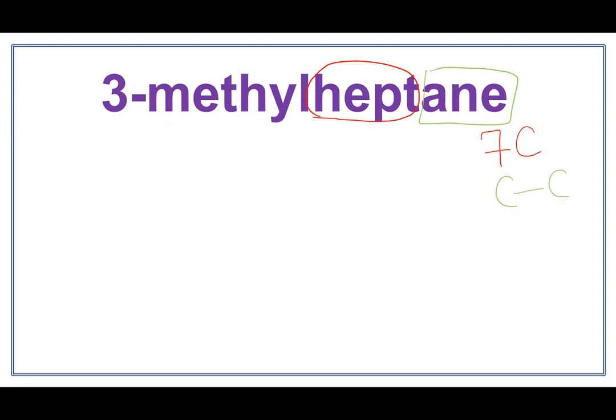Let's draw the parent chain with 7 carbons. A trick to draw these is that you always count 1 less than the actual number of carbons you want to draw. We have to draw 7 carbons, so we are going to count until 6: 1, 2, 3, 4, 5, 6.